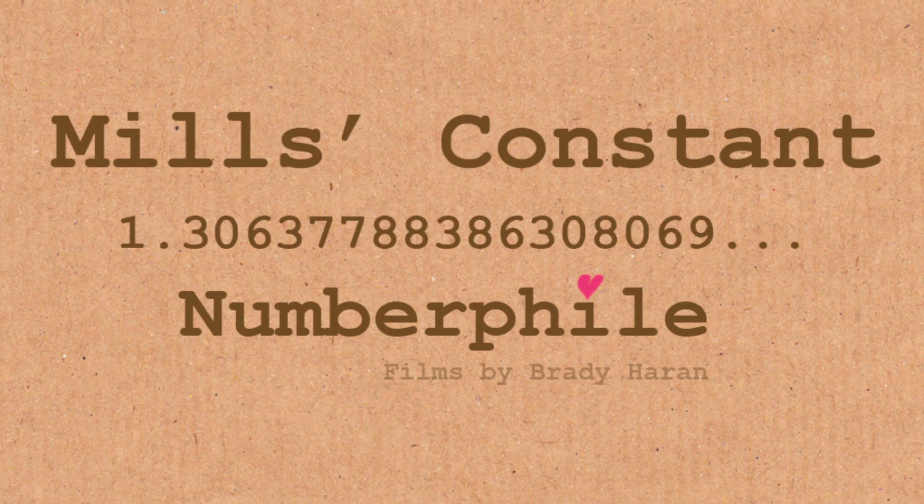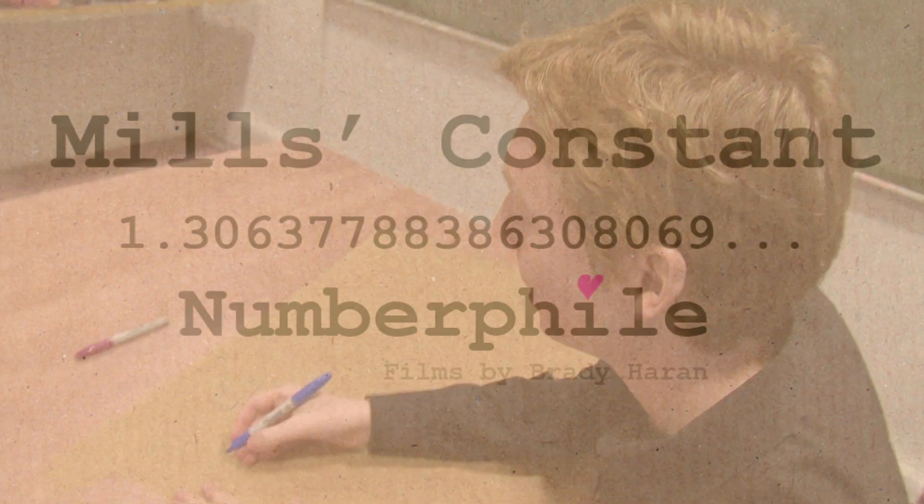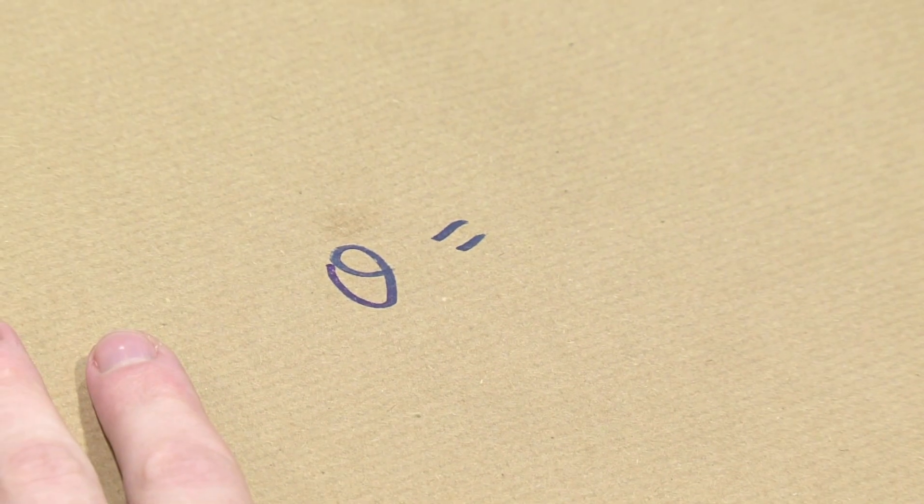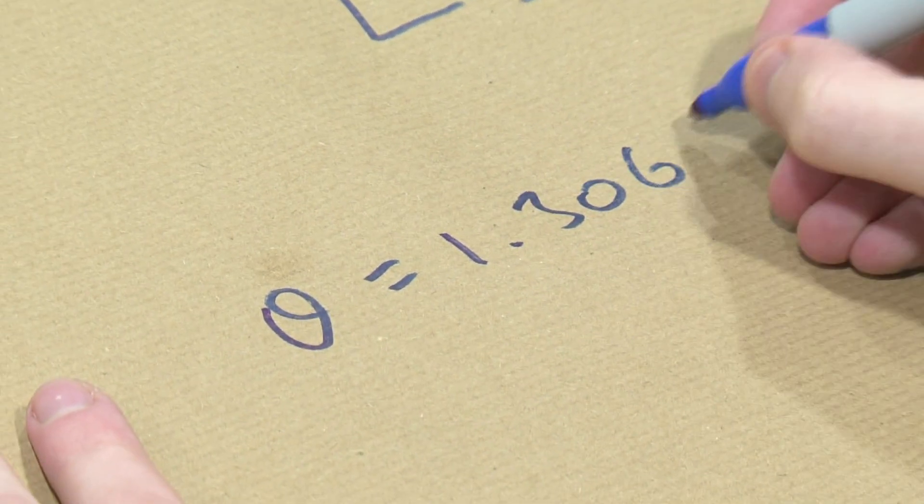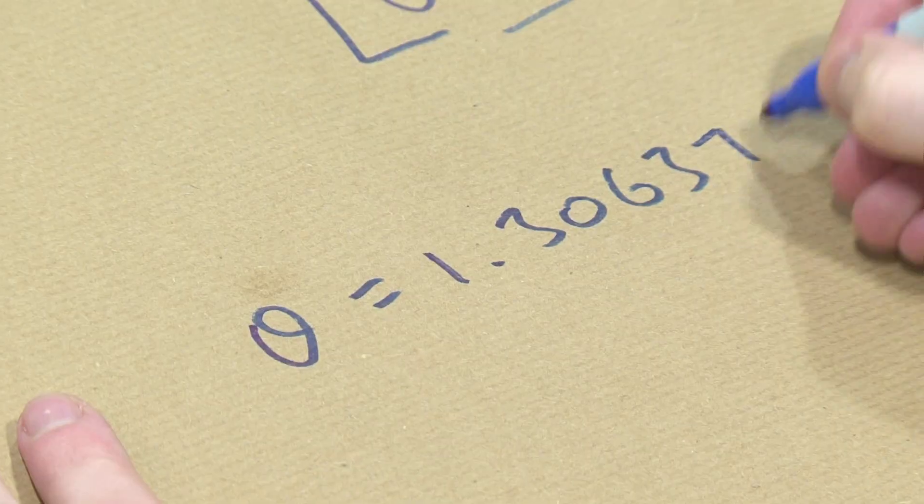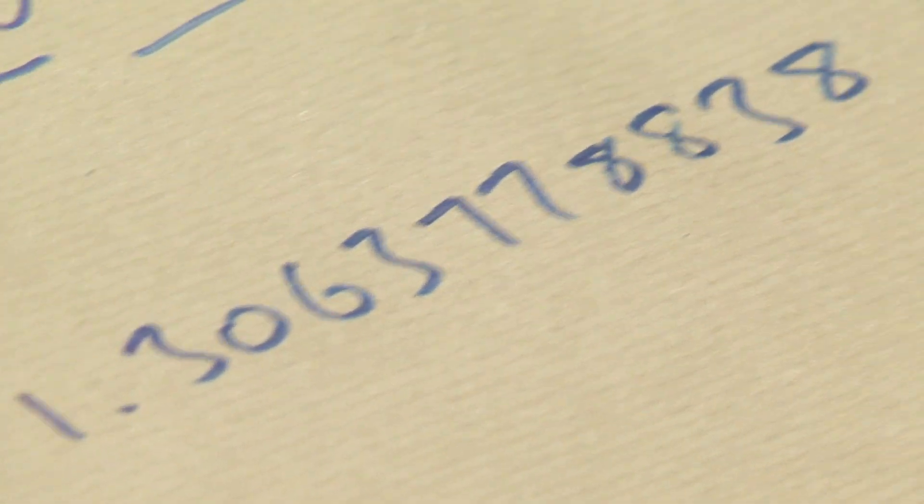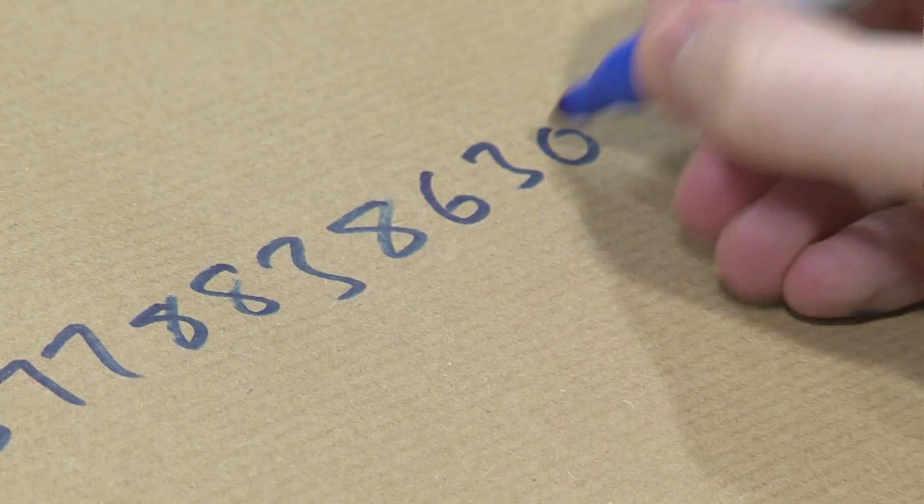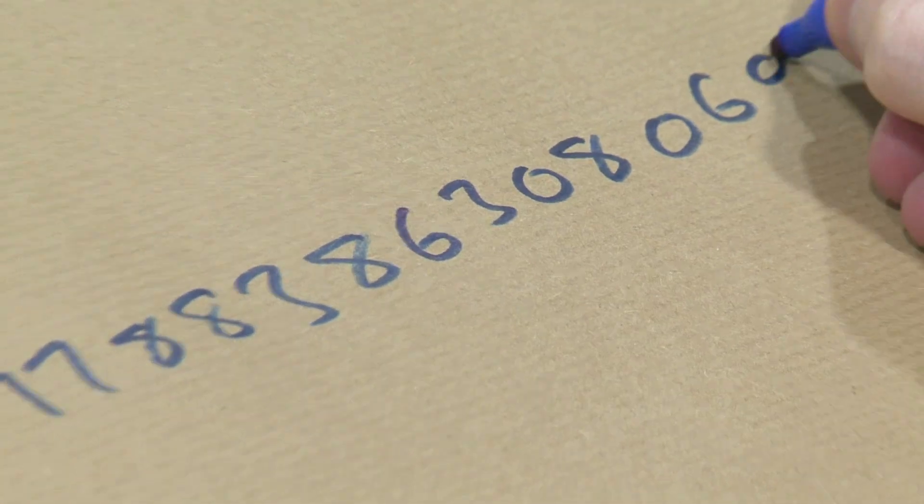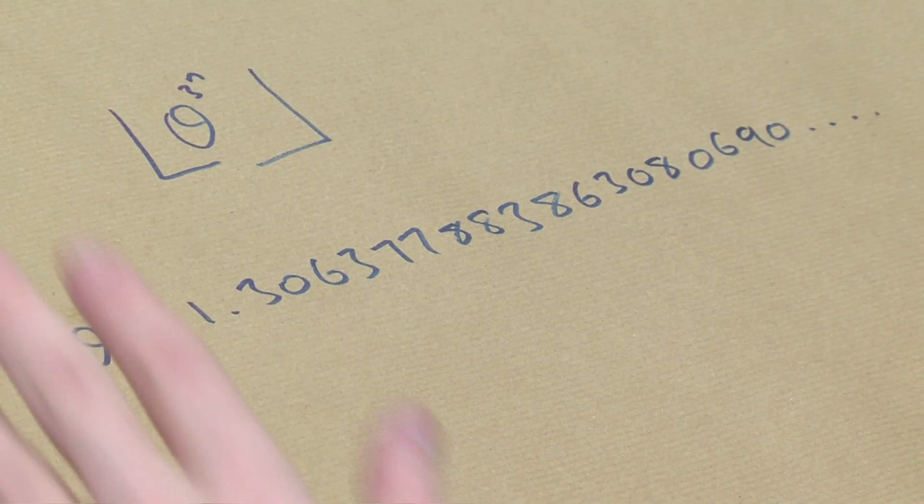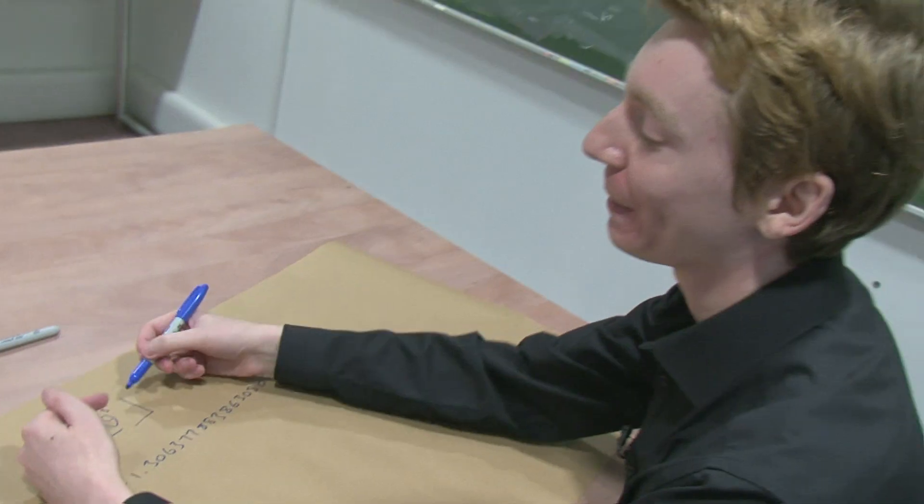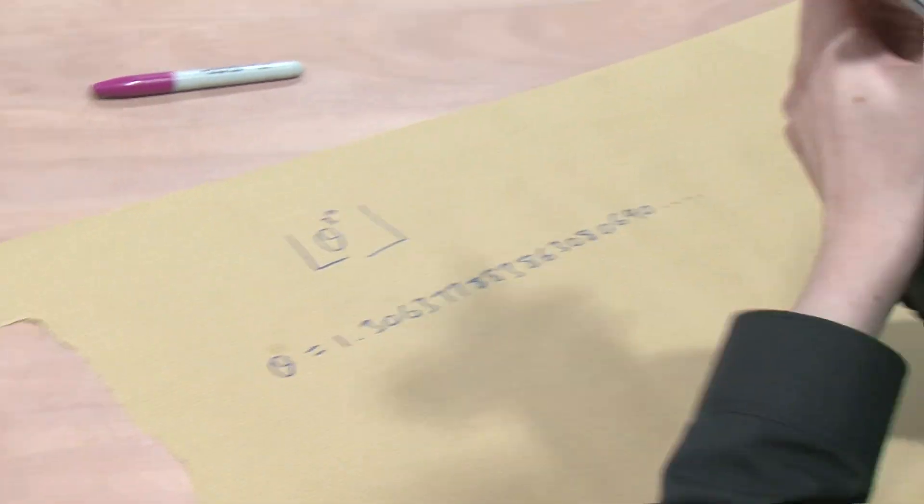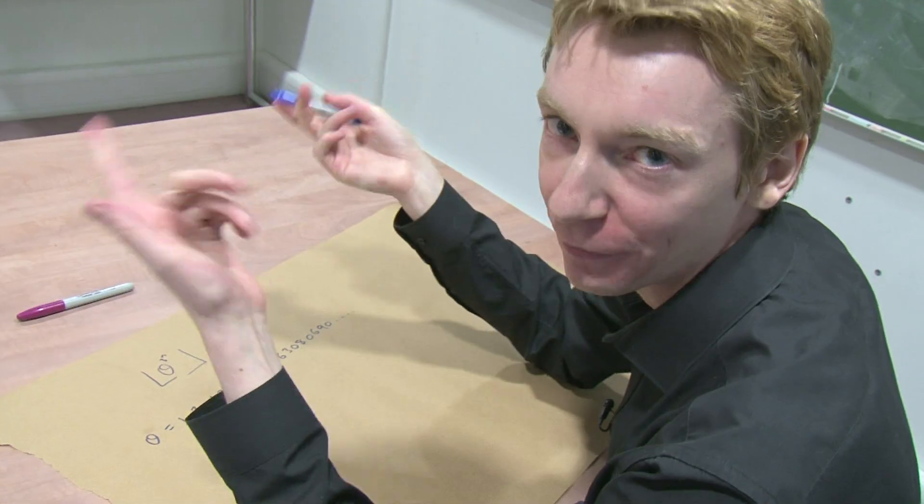The smallest value for theta where this will work is called Mills constant. I'll write it out for you. Mills constant is 1.306377883863080690 something, something, something. So you can see it's not a whole number. The value you get when you raise it is not going to be a whole number, and you have to round it down.